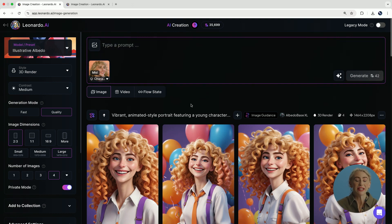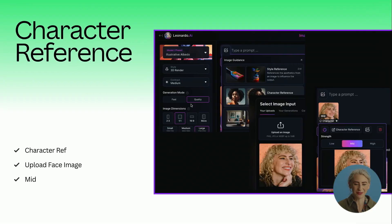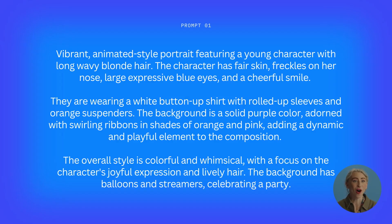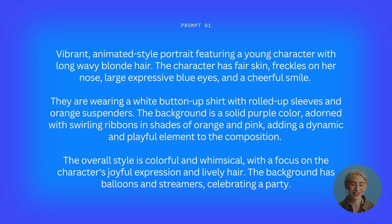There are two different ways to prompt in Leonardo and I'm going to show you both. The first way is text — writing. This is an example of a prompt: 'A vibrant animated style portrait featuring a young character' and it goes on talking about physical appearance. The second piece says 'they are wearing' and talks about the clothes you want them to wear. You can talk about the background — this says a solid purple color. The third element talks about the style — colorful and whimsical, focusing on joy. This information is what gets us that excited and animated look.